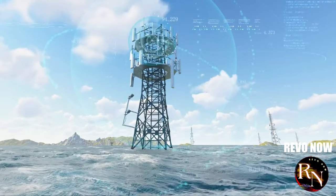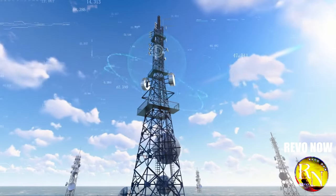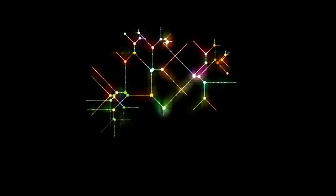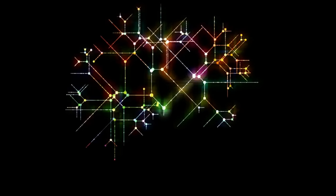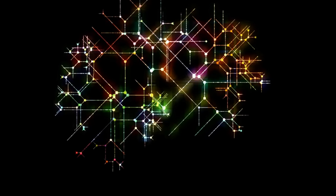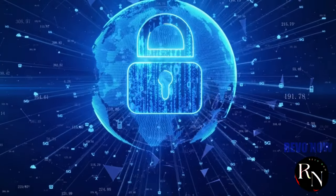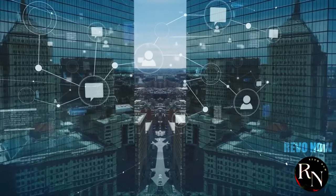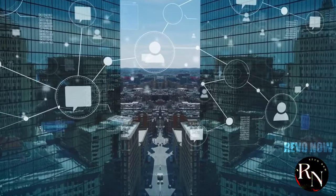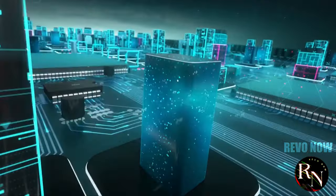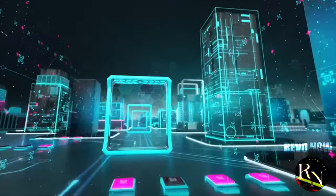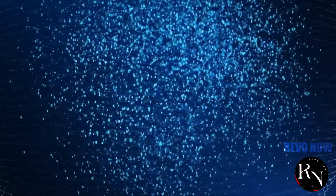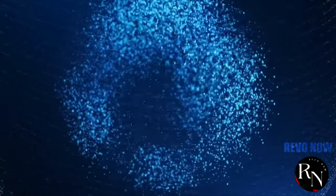They are essential for everything from streaming your favorite shows to conducting international business transactions. The control over these cables means control over the flow of information. China's move to build its own network of undersea cables is seen by some as a strategic effort to gain greater control over global communications. This could lead to a bifurcation of the internet, where different regions of the world are connected through separate networks, each with its own rules and regulations.